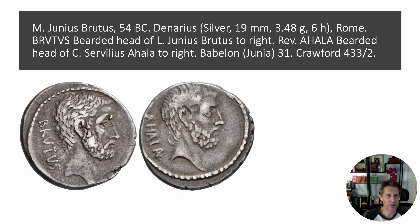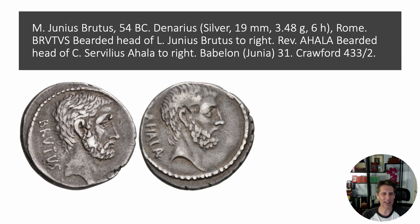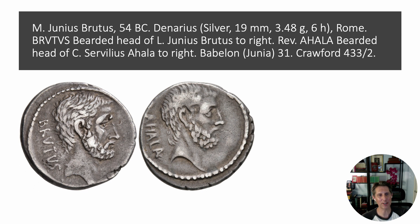But this isn't the only coin that Brutus issues in 54 BC. This second coin is also issued in 54 BC by Marcus Julius Brutus, and it advertises a different aspect of his family history. On the obverse, again, we have a picture of Brutus the founder of the Republic, with the word 'Brutus' next to him — a clear evocation of the same ideals. The other side of the coin, though, is a little more mysterious for those not well steeped in the intricacies of Roman Republican history, because the figure here is much less famous to modern audiences. This is a man named Servilius Ahala.